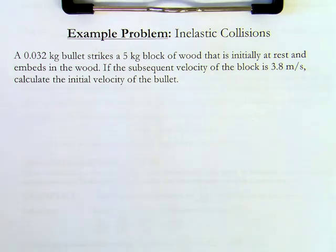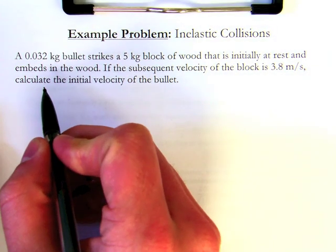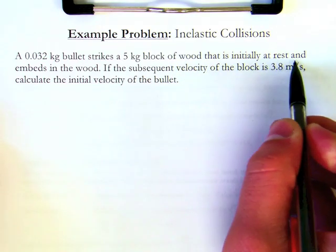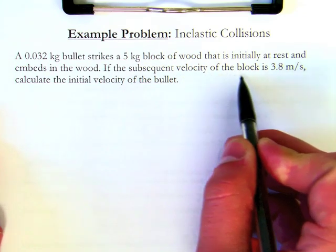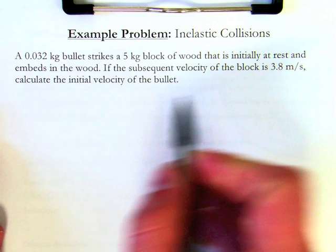So I read, a 0.032 kg bullet strikes a 5 kg block of wood that is initially at rest and embeds in the wood. If the subsequent velocity of the block is 3.8 m per second, calculate the initial velocity of the bullet.